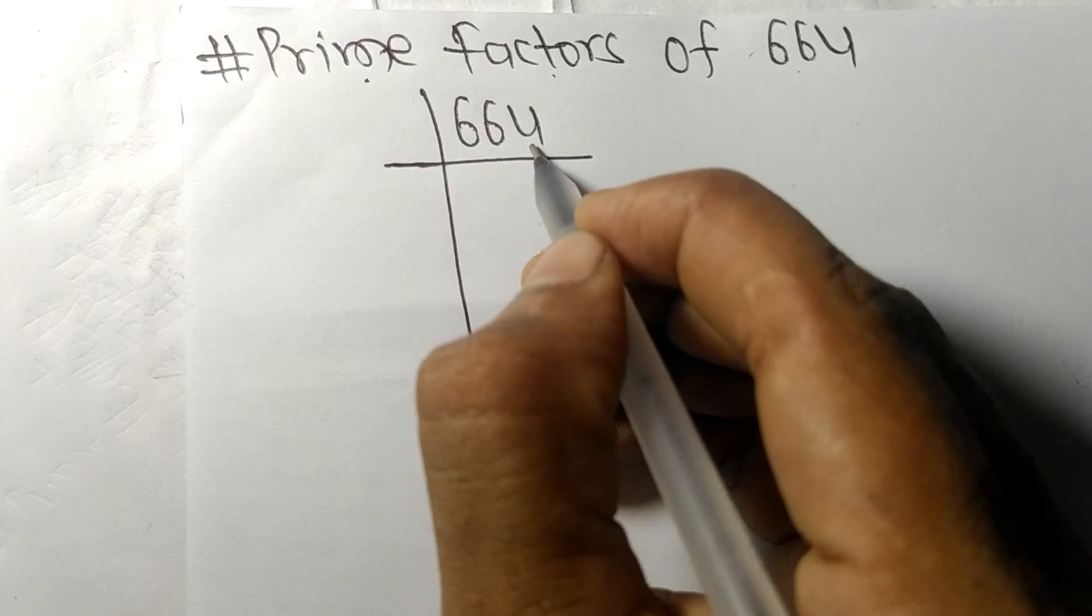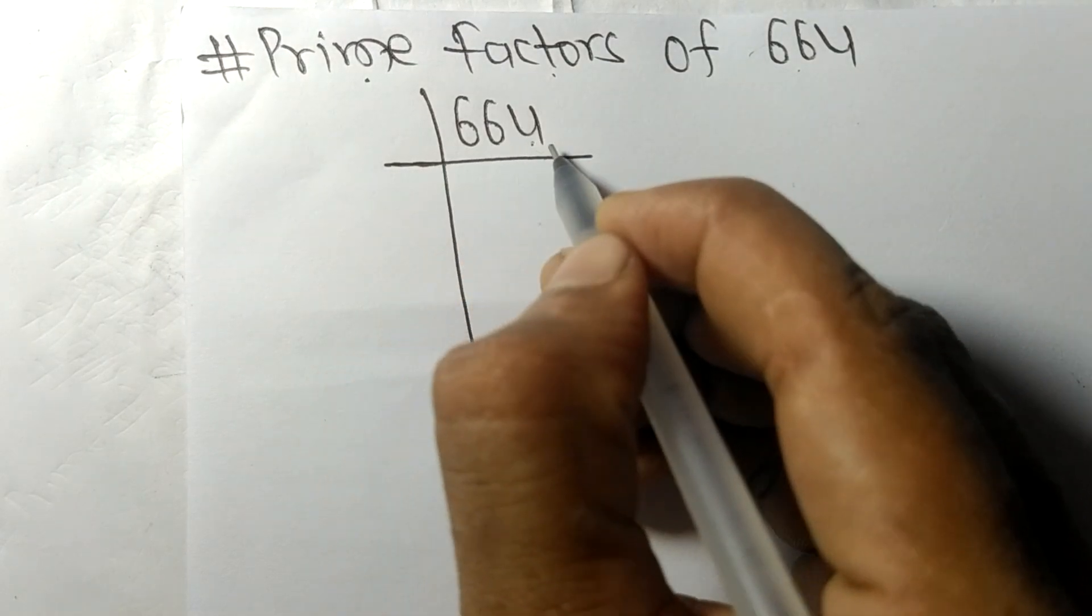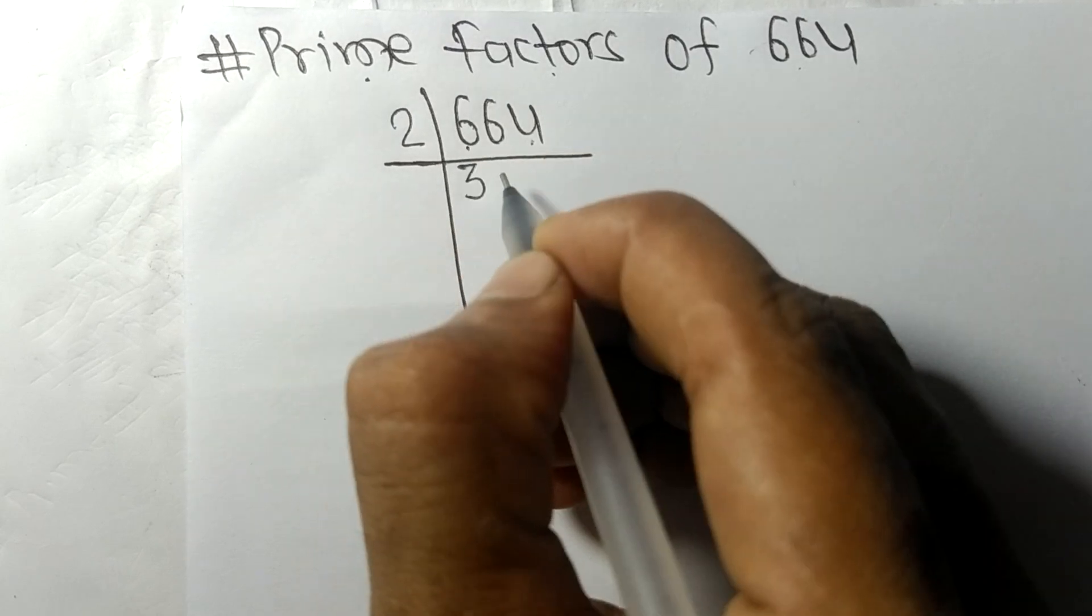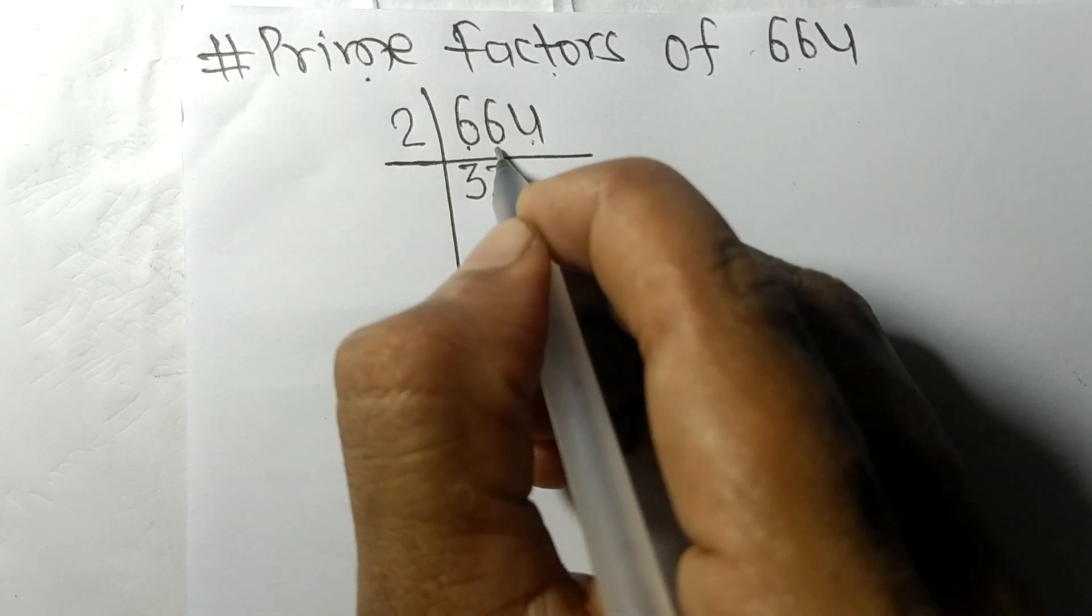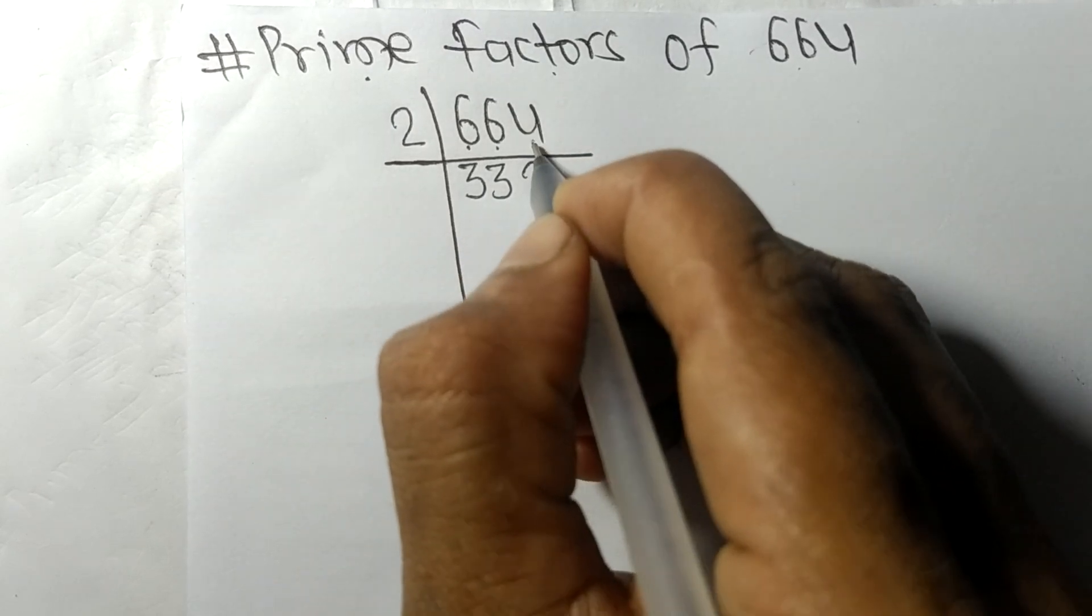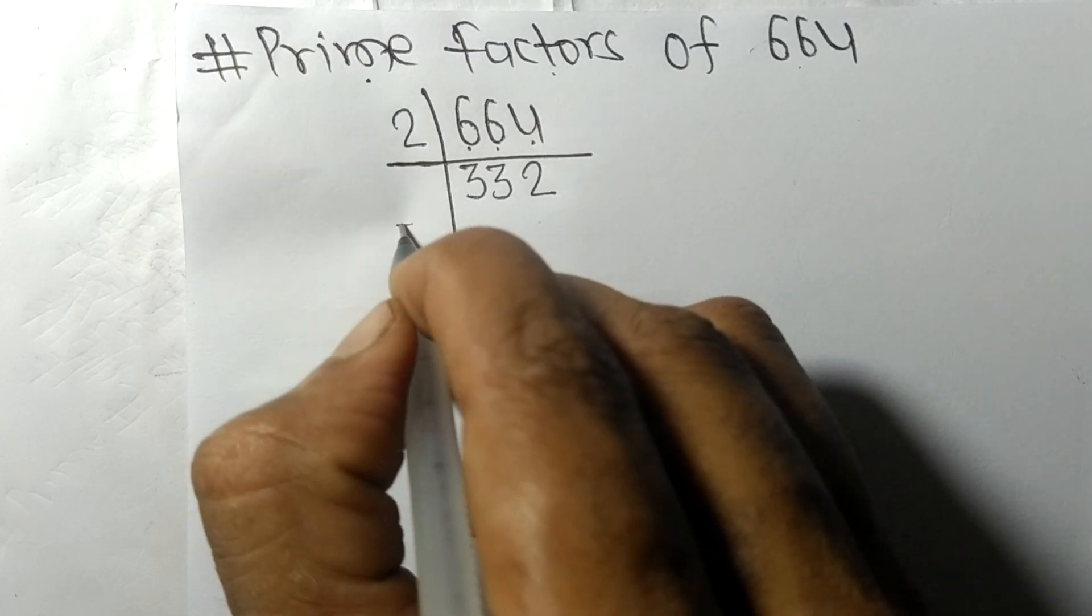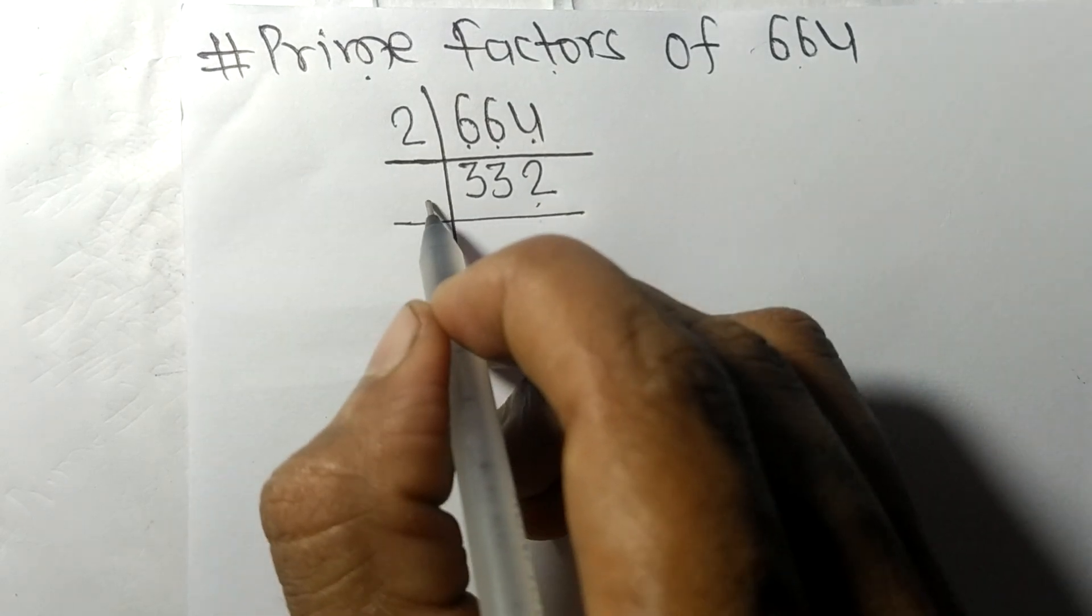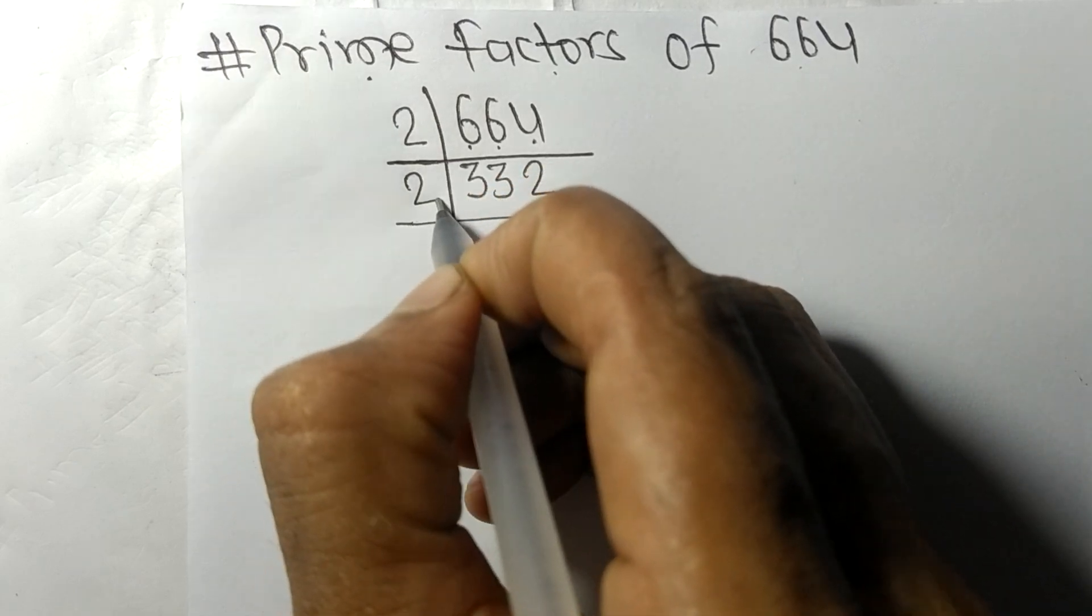It ends in 4, an even number, so it's divisible by 2. Dividing: 2 times 3 equals 6, 2 times 2 equals 4. We get 332, which again ends in an even number, so it's divisible by 2.